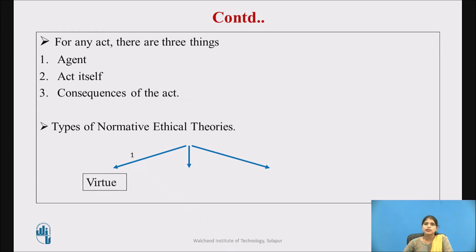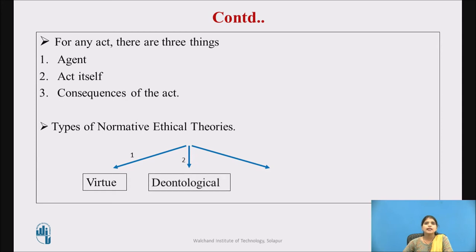The first type is virtue ethics. Virtue ethics concentrates on the moral character of the agent. According to virtue theory, we should possess certain character traits such as courage, kindness, honor, and compassion, which should be revealed in our actions. This focuses on the character of human beings. The second type is deontological ethics, which concentrates on the act being performed. According to deontological theories, certain types of acts are intrinsically good or bad — that is, good or bad in themselves.